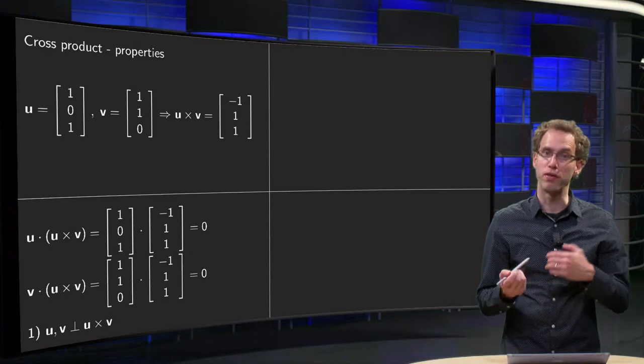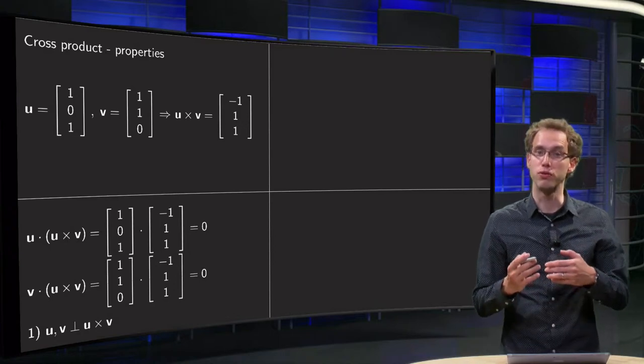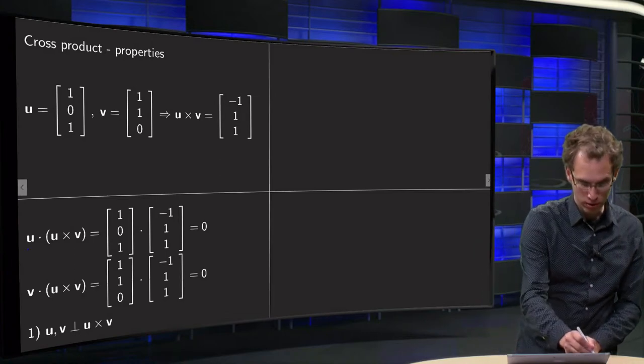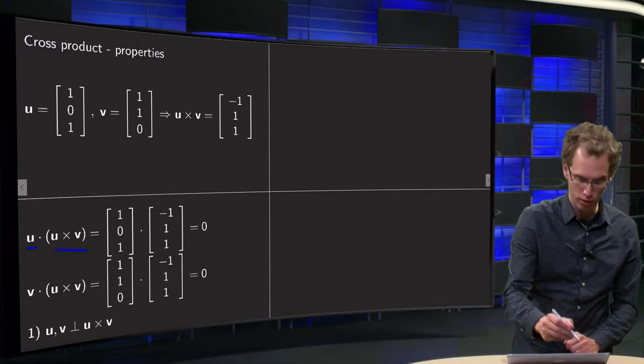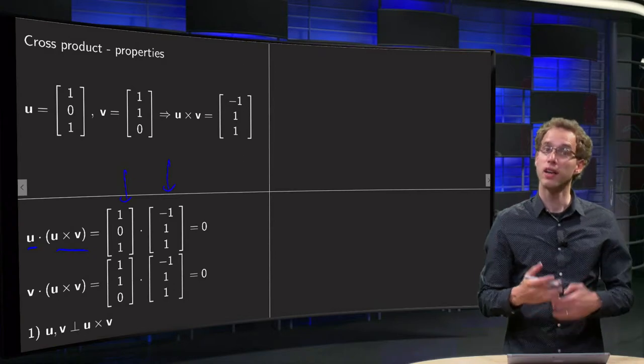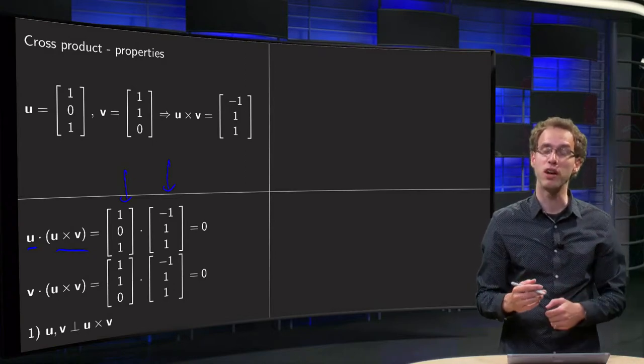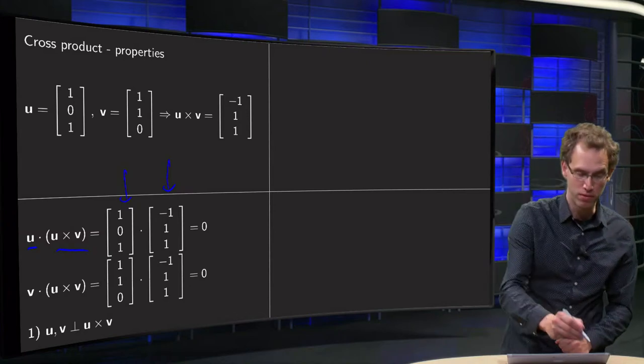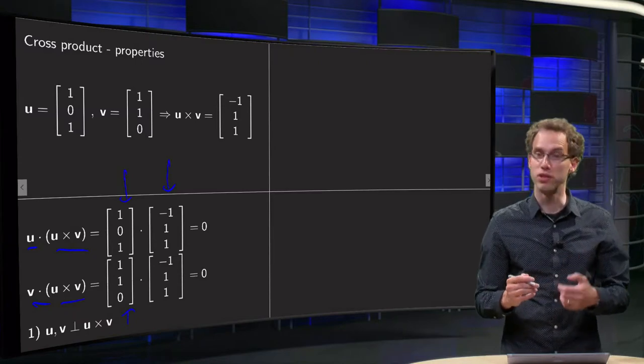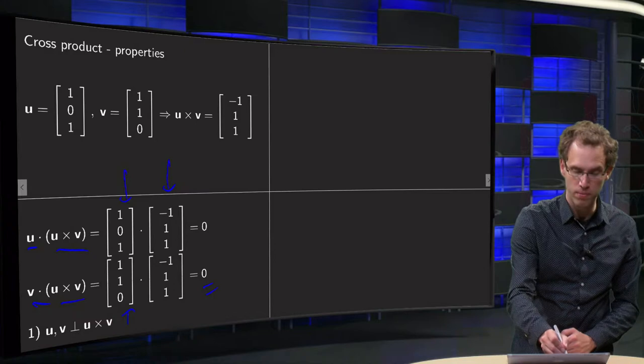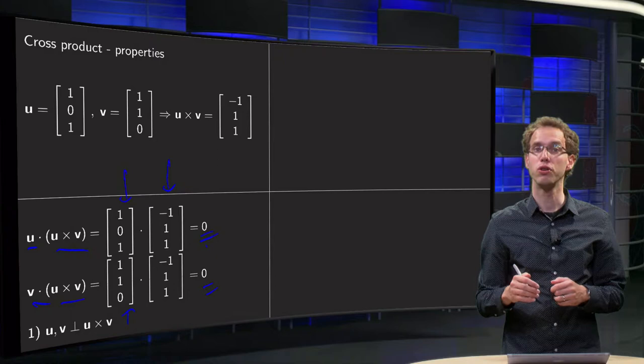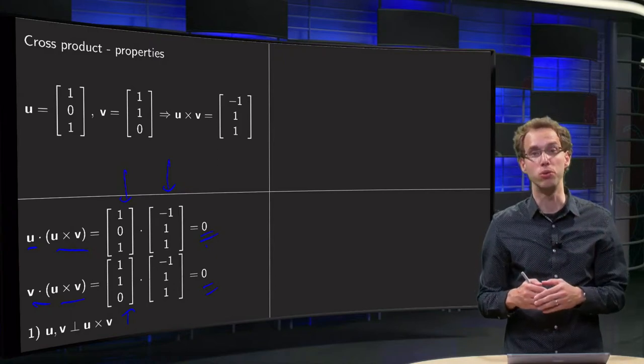So, for example, if you computed u cross v, you can after take the inner product with the vector u. So we compute u inner product u cross v. So our u was [1,0,1] and our u cross v equals [-1,1,1]. Then the inner product becomes minus 1 plus 0 plus 1 equals 0. And if we do the same with v inner product u cross v, here we have our v. Then we get minus 1 plus 1 plus 0 is again 0. So we see that in this case u is orthogonal to u cross v and v is also orthogonal to u cross v.